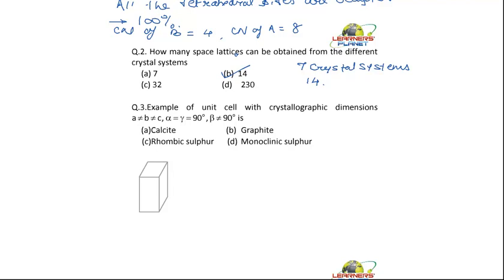This is monoclinic crystal system. Right? So what it is? It is monocrystal system, so it is present in monoclinic sulfur.